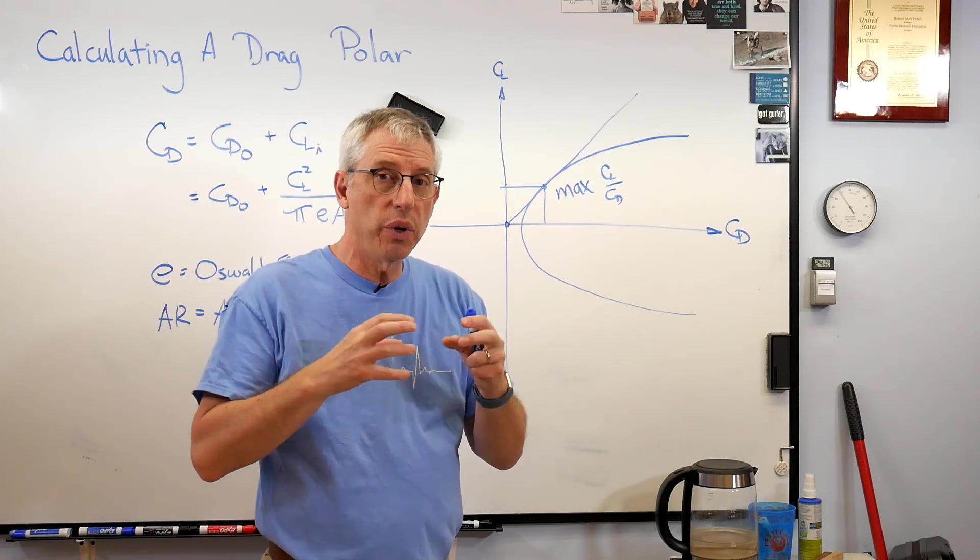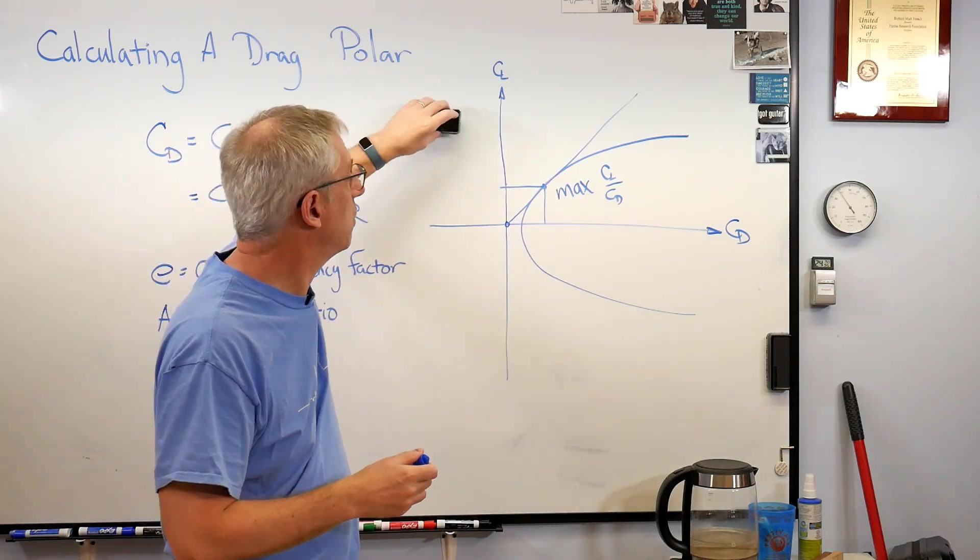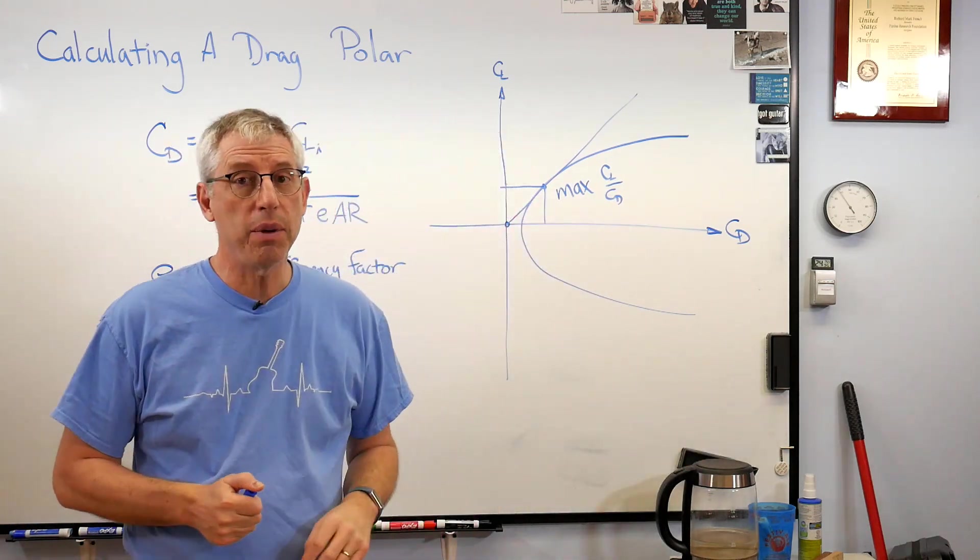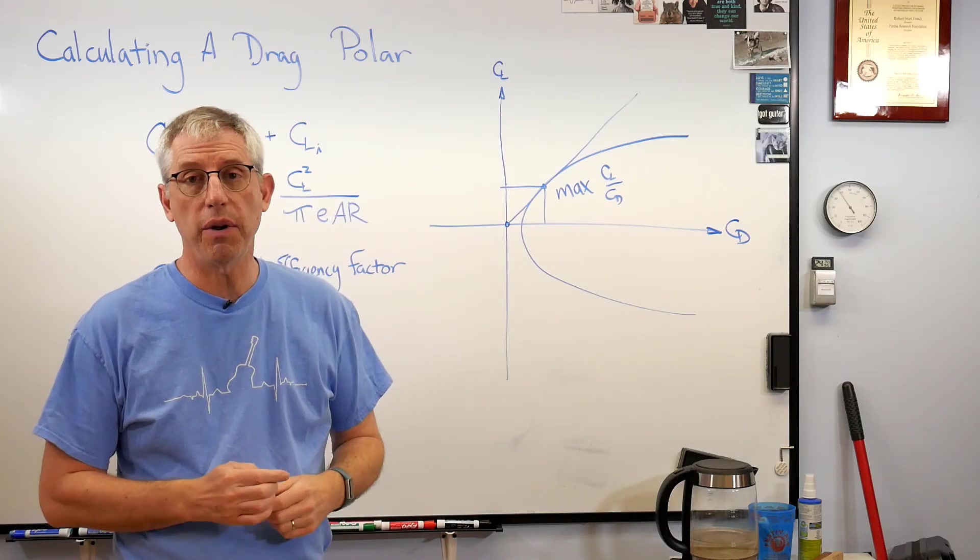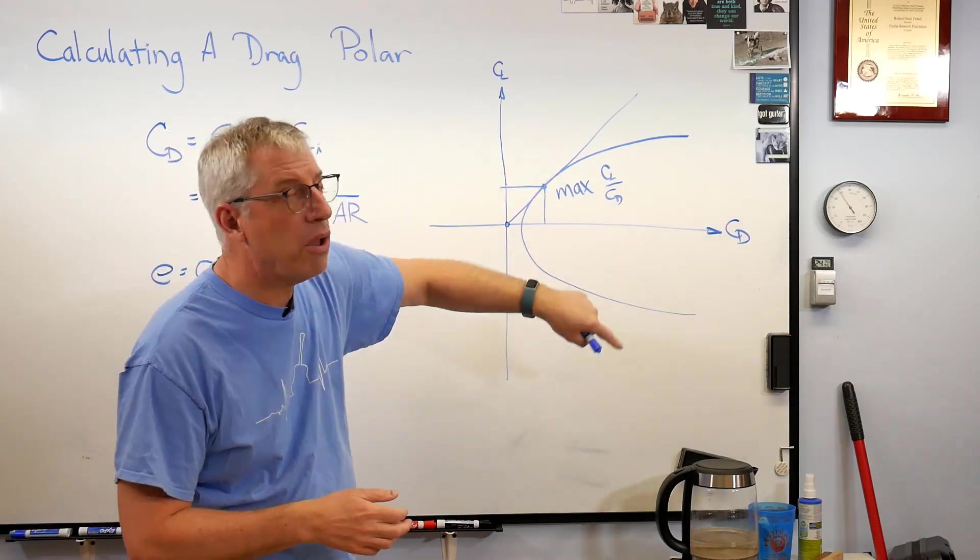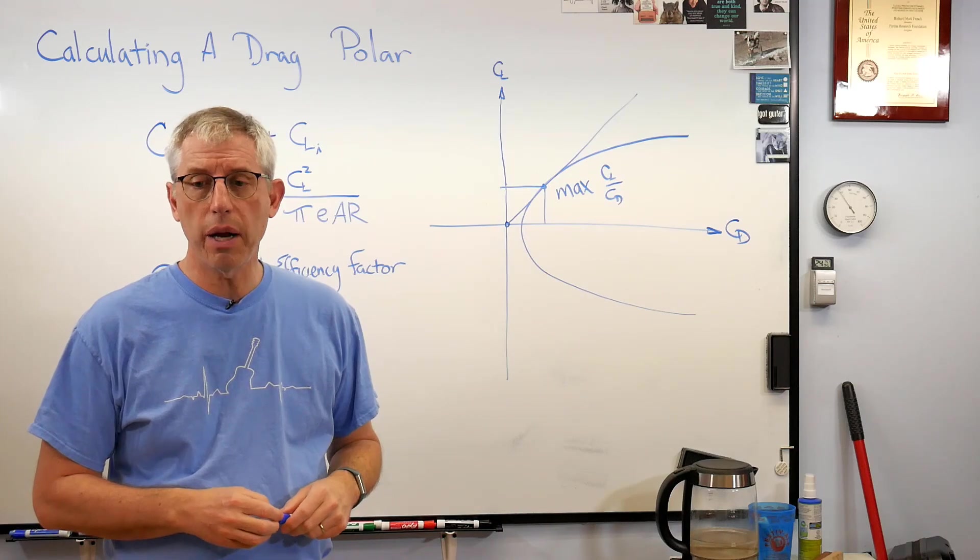For one of those really efficient open-class sailplanes, that might be thirty or forty to one. It can be very high. So this is all caught up in the drag polar.